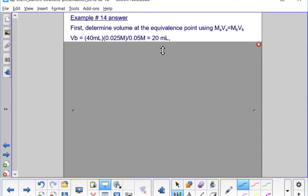The volume of the base is the volume of the acid 40 milliliters times the concentration of the acid 0.025 molar divided by the concentration of the base 0.05 molar. We get 20 milliliters.